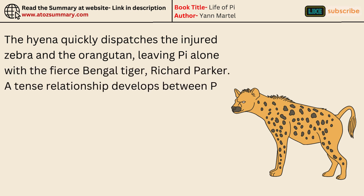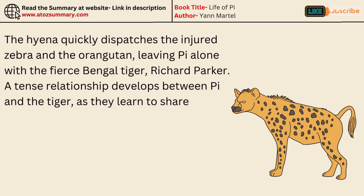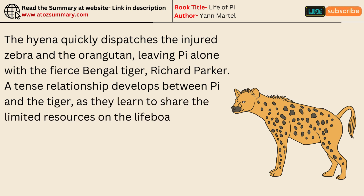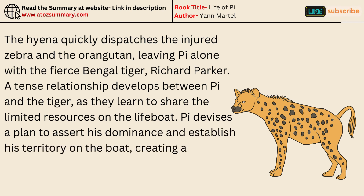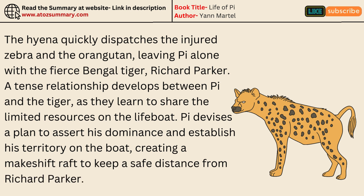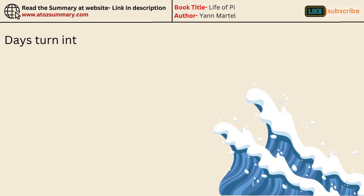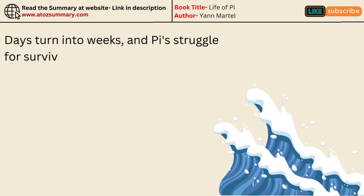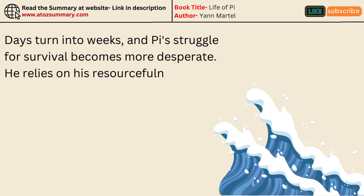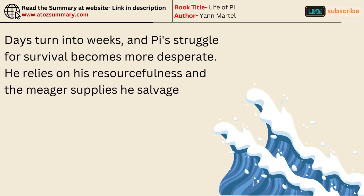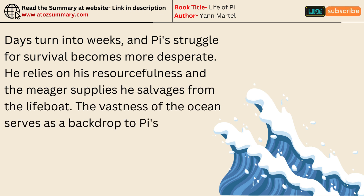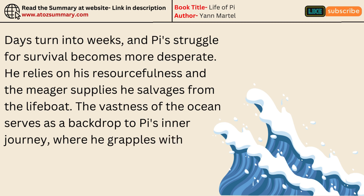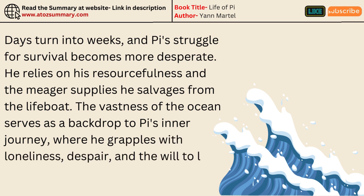A tense relationship develops between Pi and the tiger as they learn to share the limited resources on the lifeboat. Pi devises a plan to assert his dominance and establish his territory on the boat, creating a makeshift raft to keep a safe distance from Richard Parker. Days turn into weeks, and Pi's struggle for survival becomes more desperate. He relies on his resourcefulness and the meager supplies he salvages from the lifeboat. The vastness of the ocean serves as a backdrop to Pi's inner journey, where he grapples with loneliness, despair, and the will to live.